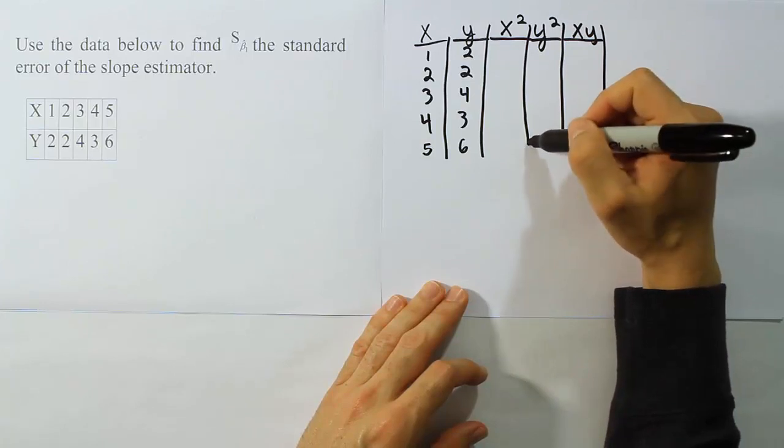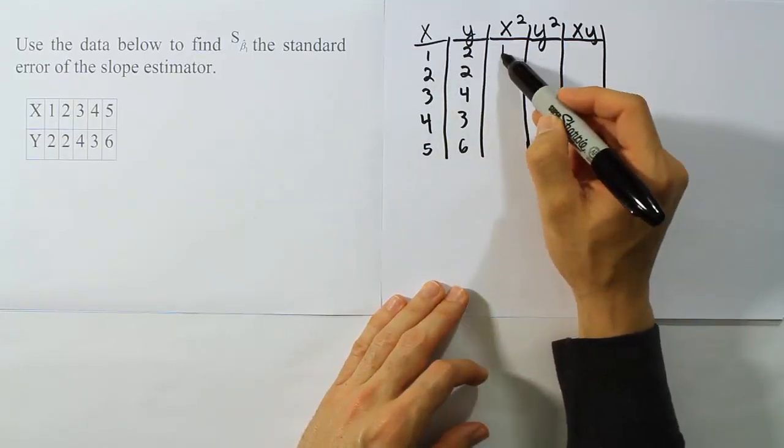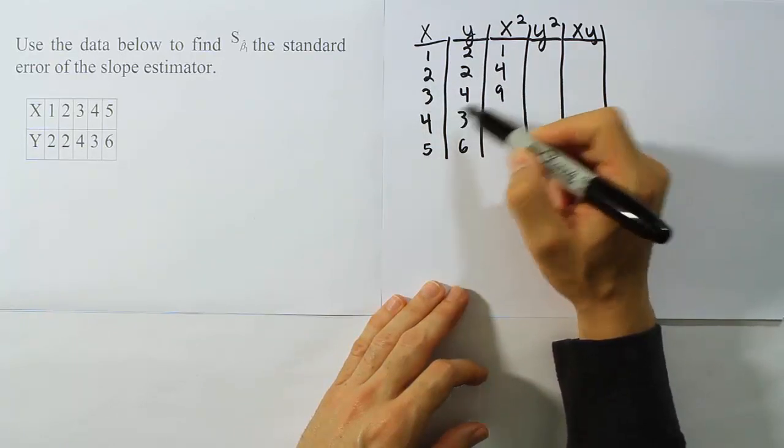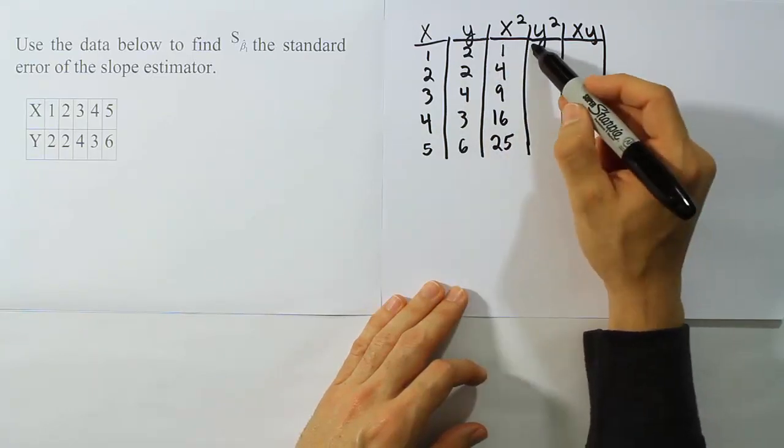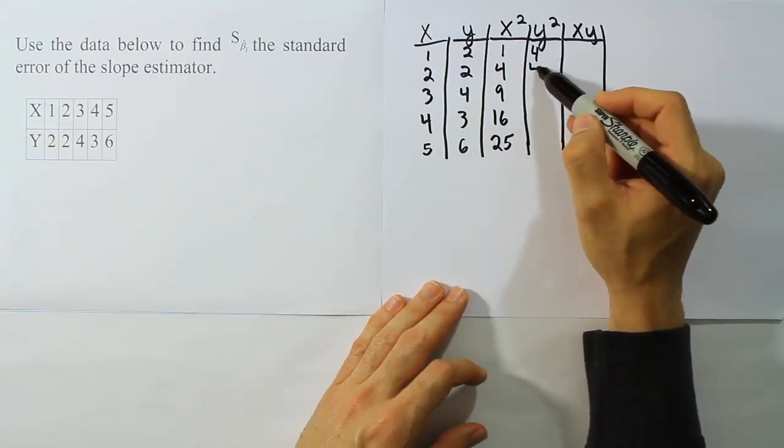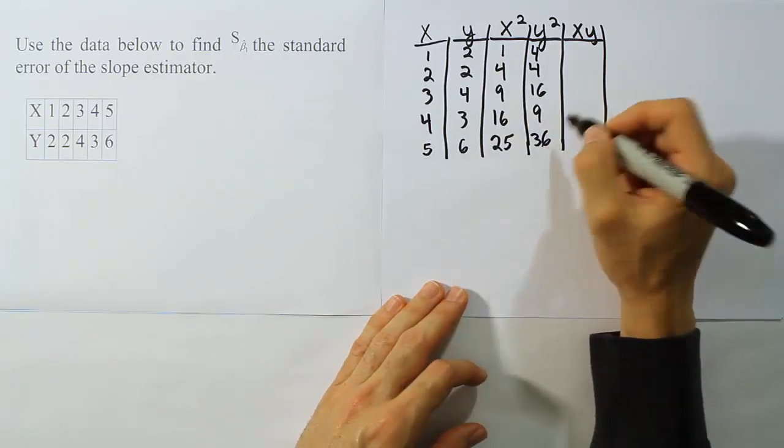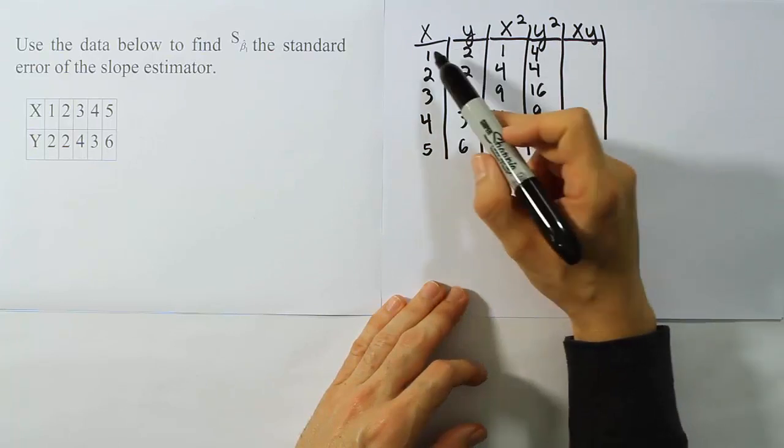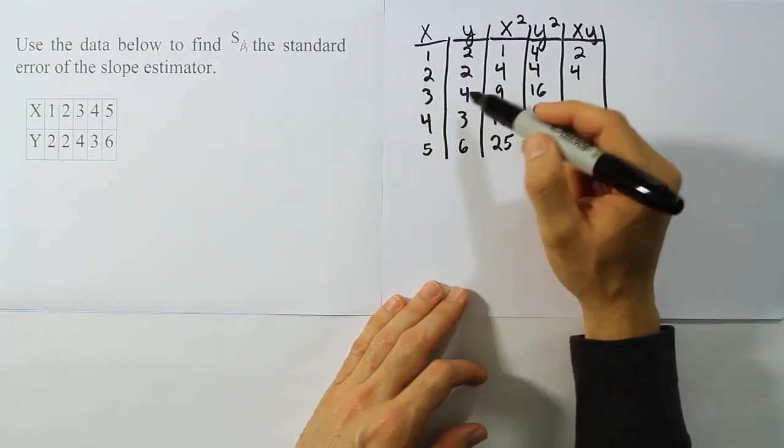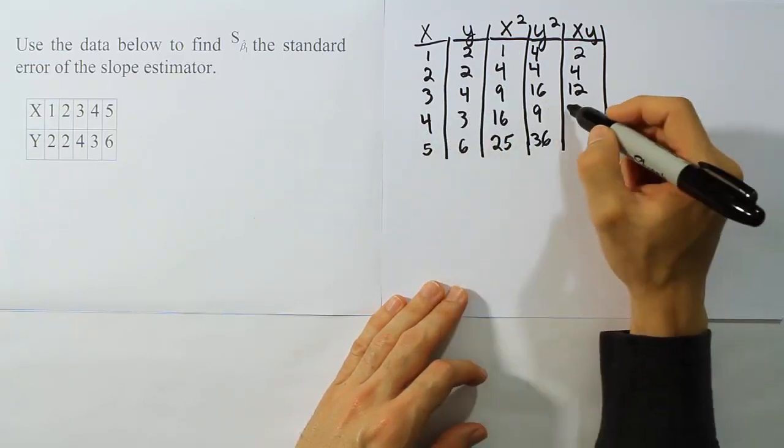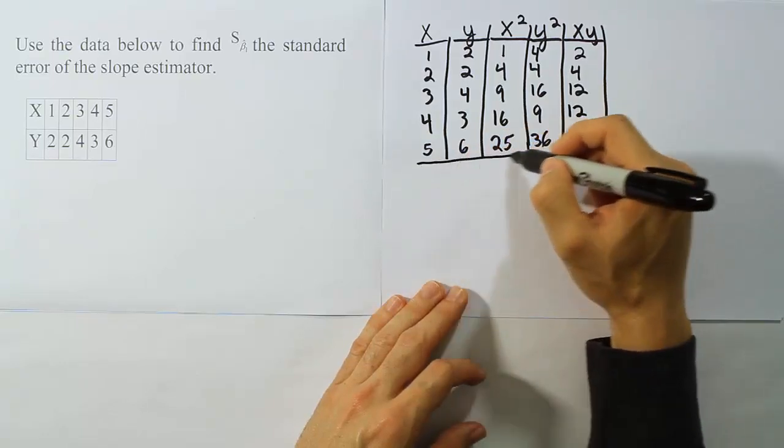So this is just a little bit of tedious arithmetic that we have to do. We need to square all the x's, so that'll be 1 squared is 1, 2 squared is 4, 3 squared is 9, 4 squared is 16, 5 squared is 25. Then the y squareds will have 2 squared is 4, 2 squared is 4, 4 squared is 16, 3 squared is 9, 6 squared is 36. And then the x times y column, so 1 times 2 is 2, 2 times 2 is 4, 3 times 4 is 12, 4 times 3 is 12, and then 5 times 6 is 30. So that's all the columns filled in.